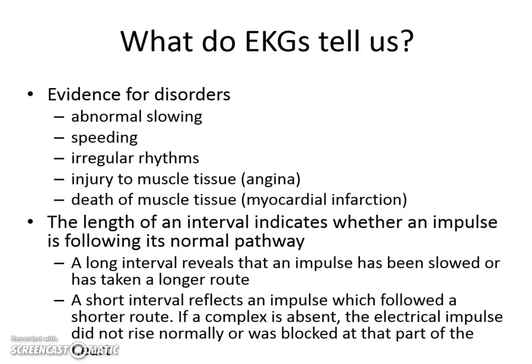What do EKGs tell us? They look for normal waves and impulses, but they can also identify disorders — abnormal slowing called bradycardia, abnormal speeding up called tachycardia, and irregular rhythms of the heart. Sometimes people can have injury or even death of muscle tissue without knowing it. A tightening or stiffness in the chest is called angina, and death of heart muscle is called myocardial infarction, or a heart attack. The length between the EKG waves — P, Q, R, S, and T — tells us whether the impulses follow the normal guide. You'll have a chart in your lab with normal intervals, and you'll need to identify whether long or short intervals indicate delayed conduction, absent waves, or electrical misfiring. You will be asked about these different EKG diagnoses on the test.